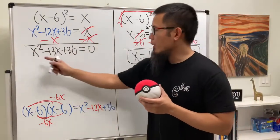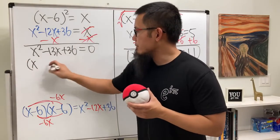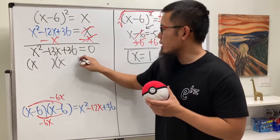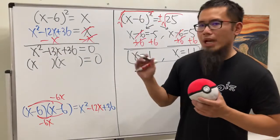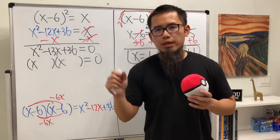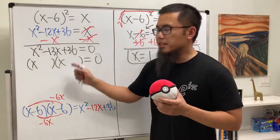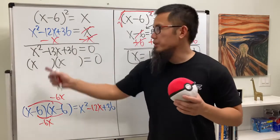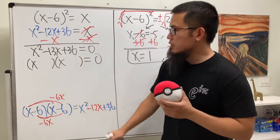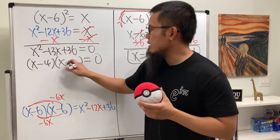Now, factor this. Well, we need to have x times x to get us x squared. And we have to think about two numbers so that when they multiply, we get 36. And together, they add to be negative 13. And the correct combination is negative 4 and negative 9.